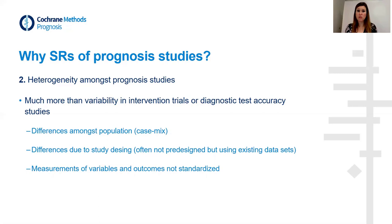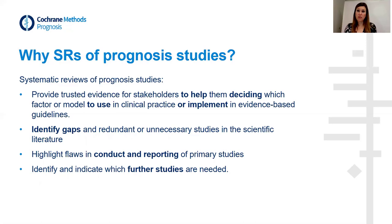The variation is mainly among the population — there is variation in case mix, but also a huge variation in study design, as prognosis studies are often not pre-designed. We use existing datasets in which variables and outcomes were already measured. Often this is not standardized across studies and sometimes not even within a study, so there is a lot of variation.